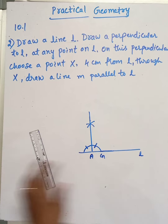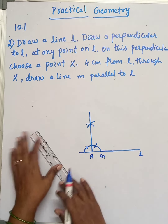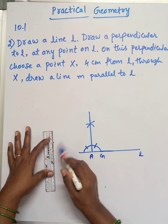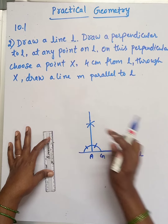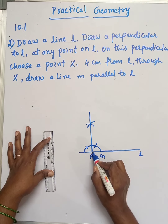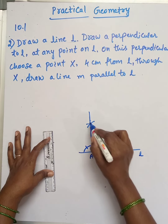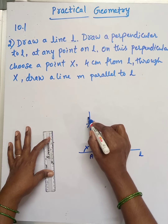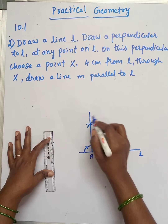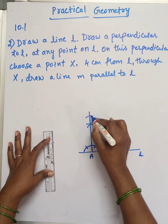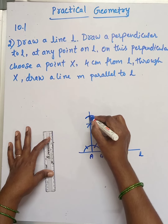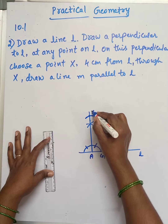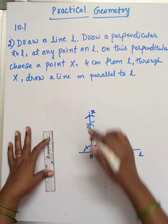Now we need to set the compass to 4 cm using the ruler and scale. Mark a point at 4 cm from L on the perpendicular. This point will be X.